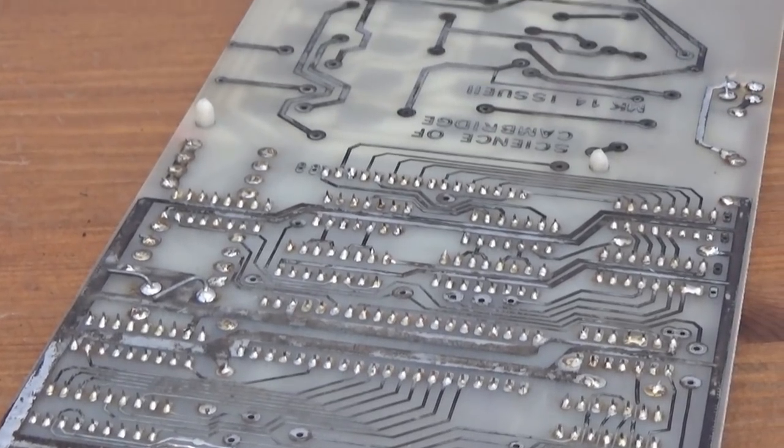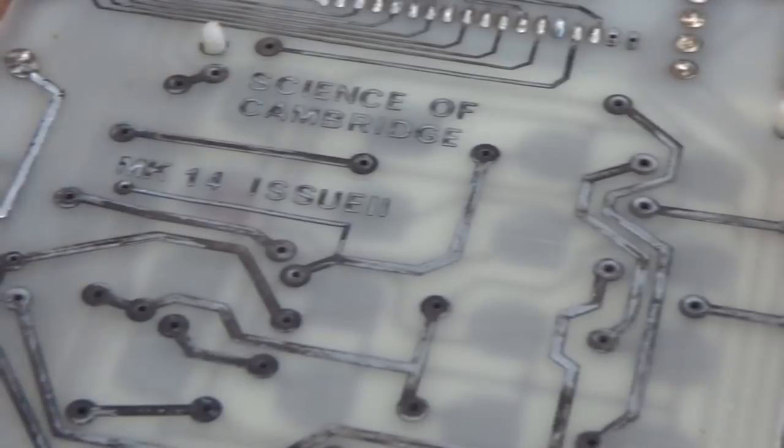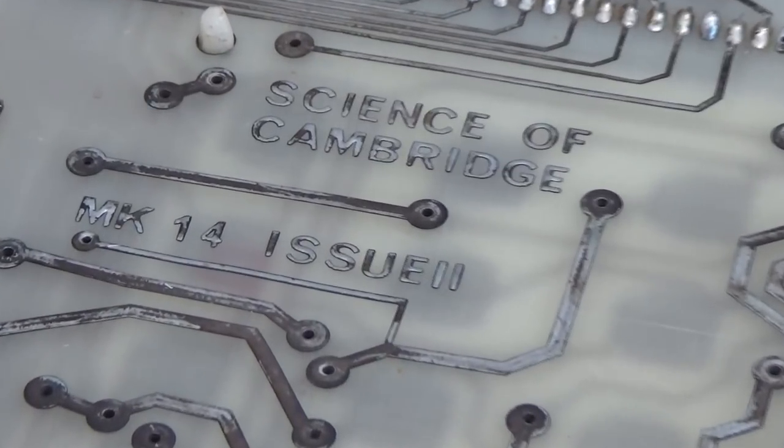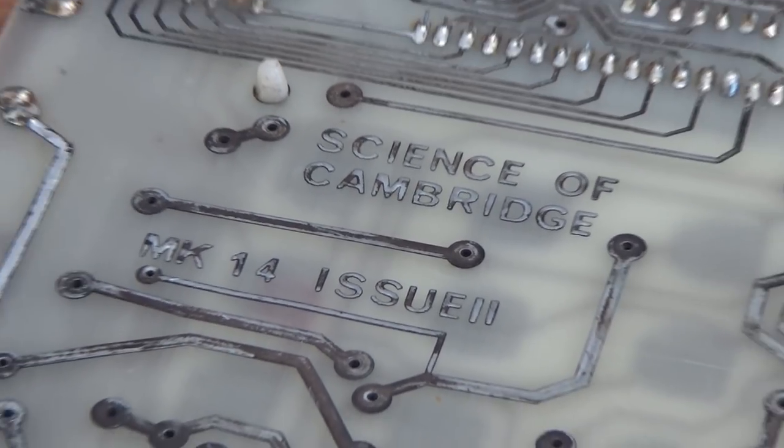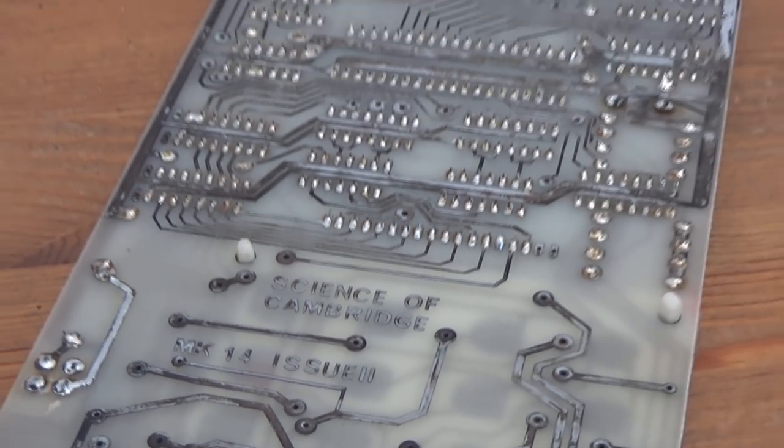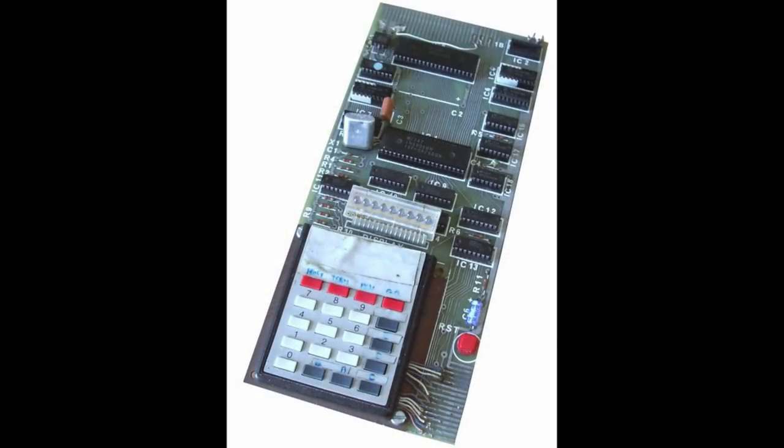Without the Mark 14 there might never have been a ZX81, a Spectrum, a BBC Micro or an Archimedes and the British computer scene would have been very different. But all of that said, this little beastie has got an 8 or 9 red LED 7 segment display on it.